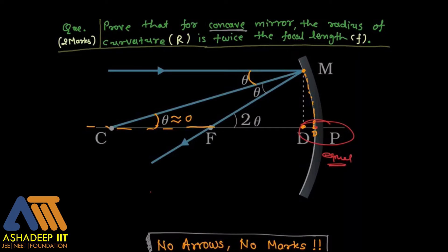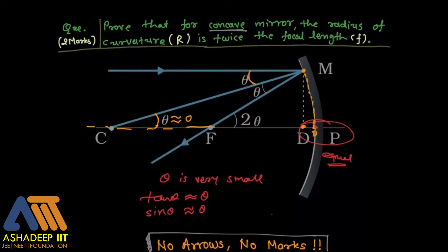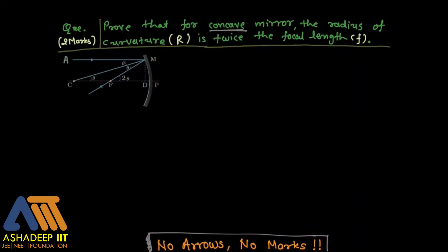From class 11 we know that if theta is very small, then tan theta is nearly equal to theta, and sin theta is also nearly equal to theta. This is because at theta equal to zero, sin zero is zero and tan zero is also zero — their values converge to theta.